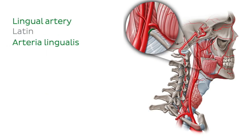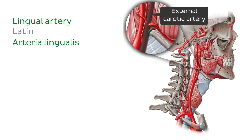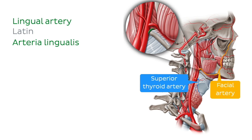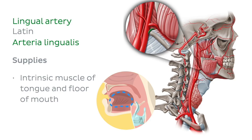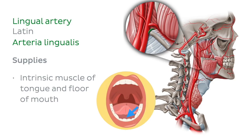The lingual artery is the third branch of the external carotid artery. It arises anteromedially from the external carotid artery between the superior thyroid and facial arteries. Here we can only see the beginning of the artery because it disappears deep to the hyoglossus muscle. The lingual artery supplies the intrinsic muscles of the tongue and the floor of the mouth.